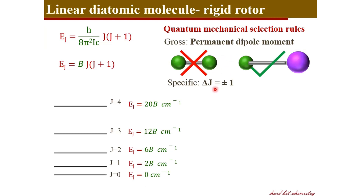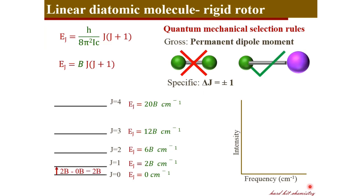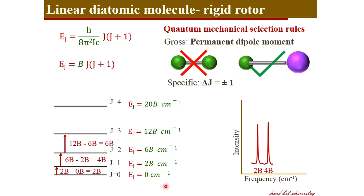The specific selection rule states that the permitted rotational transitions correspond to a change in rotational quantum number ΔJ = ±1, where the positive sign indicates absorption and negative indicates emission. For absorption, ΔJ = +1: from J = 0 to J = 1, the energy difference is 2B, giving the first spectral line at position 2B. The transition from J = 1 to J = 2 gives an energy difference of 4B, so the second line is at 4B. The next transition corresponds to 6B, and so on.